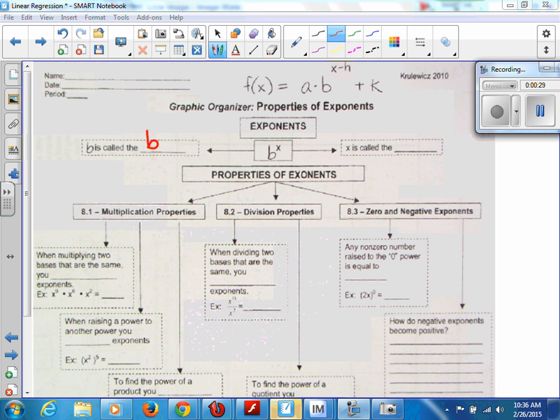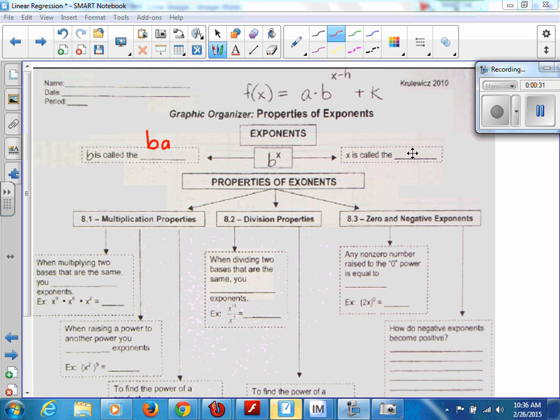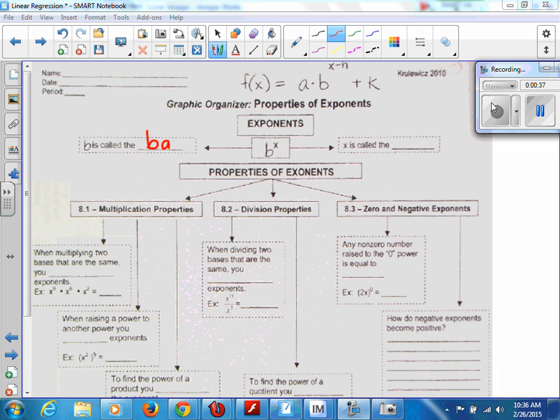B is called the base, very good. Then we go to the next side. X is called the blank. Pay attention, follow along. X is called the exponent.